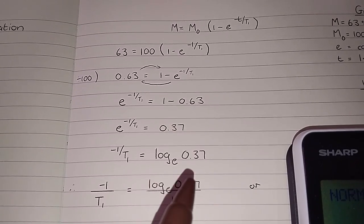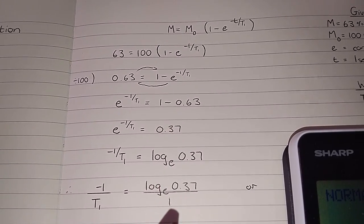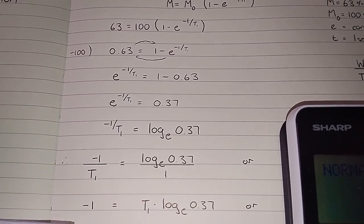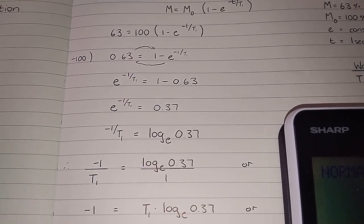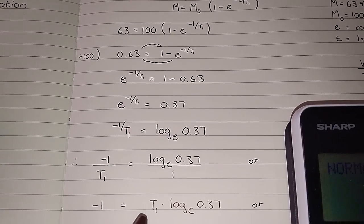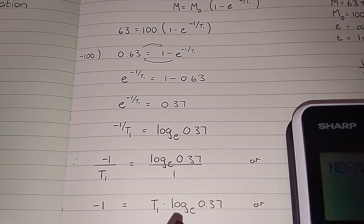And once you've got that going, you simply cross multiply. You end up with this over here: the minus 1 is equal to that, and then you simply divide by this log value over here.